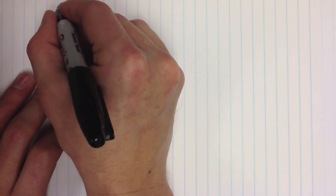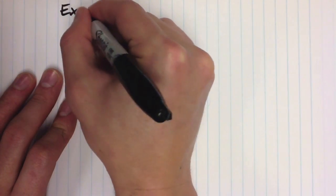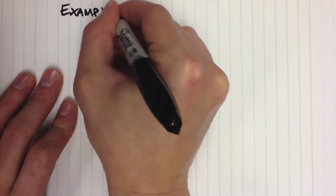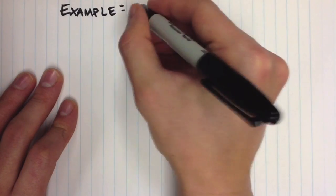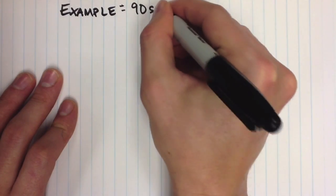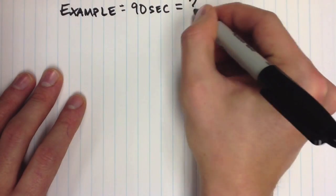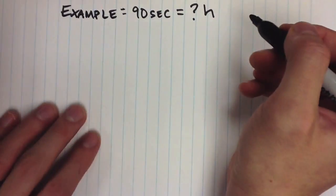In our example problem, we observed a 20-gram mouse inhale one milliliter of oxygen over a time period of 90 seconds. However, before we can obtain our final units of milliliters per gram hour, we first must convert 90 seconds to hours.